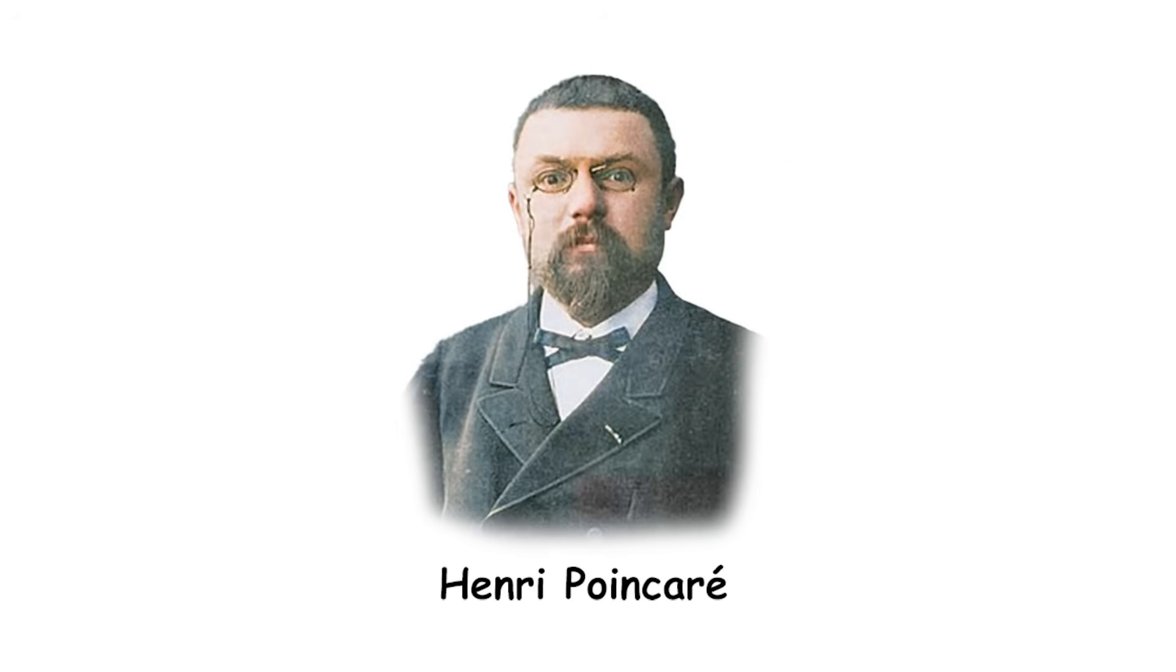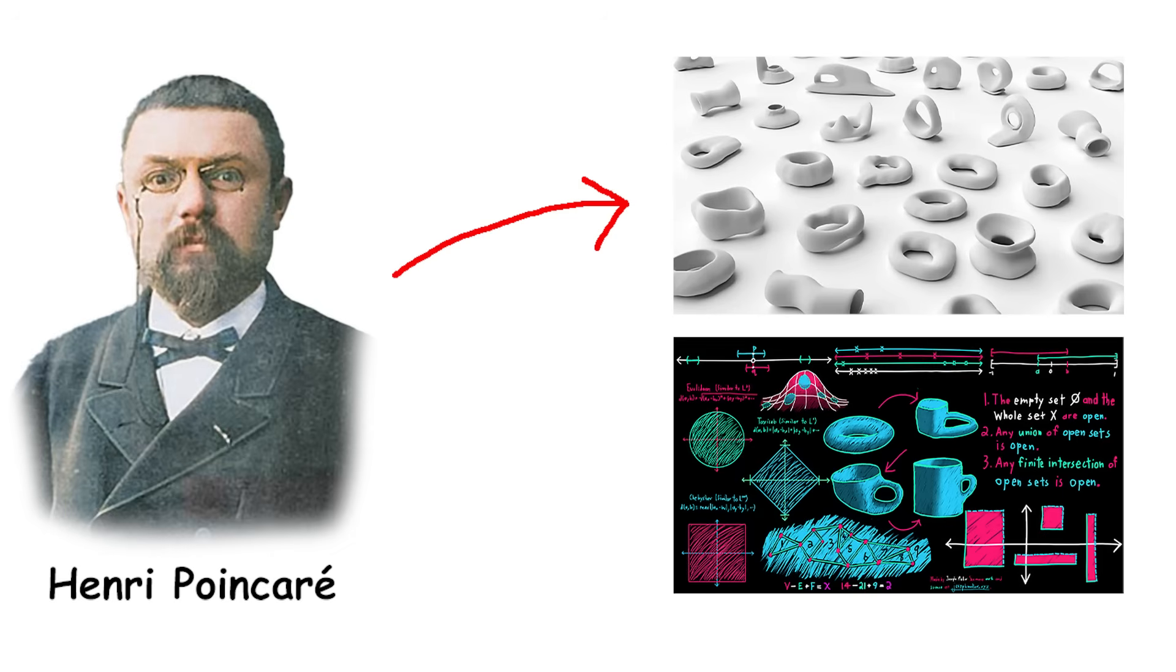Henri Poincaré was a famous French mathematician who lived around a hundred years ago. He studied a special kind of math called topology. Topology is all about shapes and how they can be changed. For example, you can stretch or twist a shape, but you can't cut it or glue it together. Topologists want to find ways to tell different shapes apart, even if they look different but can be changed into each other.